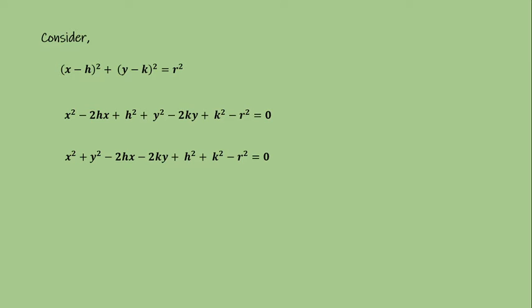For simplification, we follow some substitution: let h be minus g and k be minus f. Further, h square plus k square minus r square is replaced by c. This substitution gives us x square plus y square plus 2gx plus 2fy plus c is equal to 0. This is the general equation of the circle.